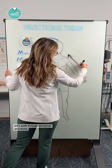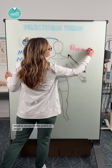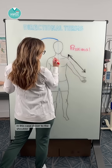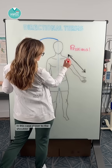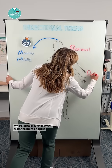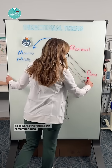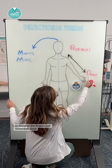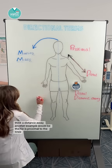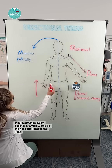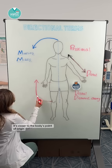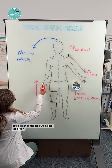Let's walk through proximal and distal. Proximal is closer to the point of origin — in this case, closer to the shoulder — where distal is further away from the point of origin, so towards the fingers. Just remember: distal, think distance away. Another example would be the hip is proximal to the knee — it's closer to the body's point of origin.